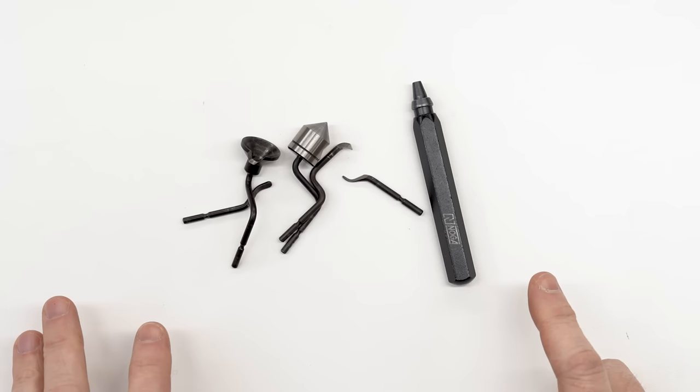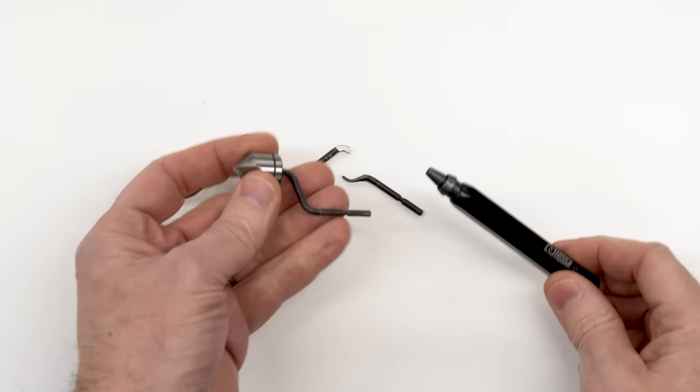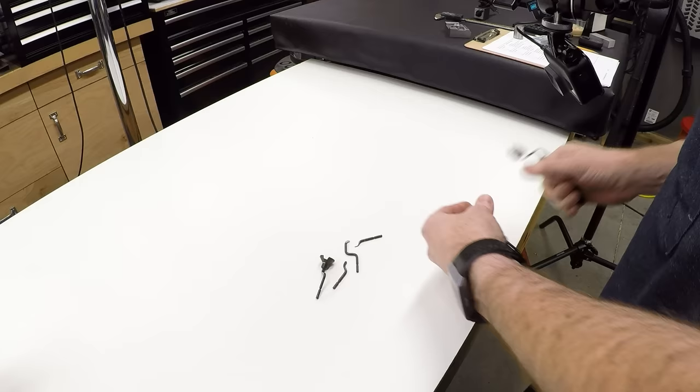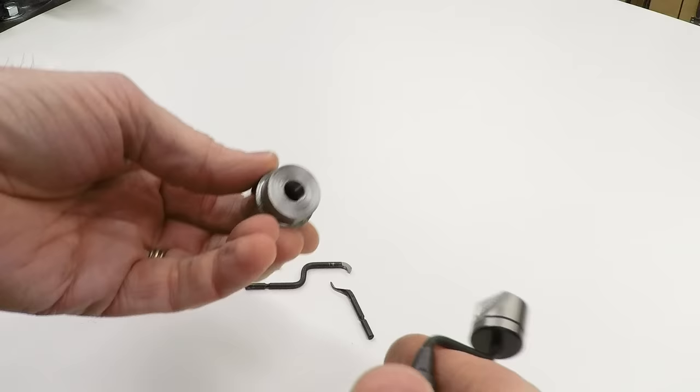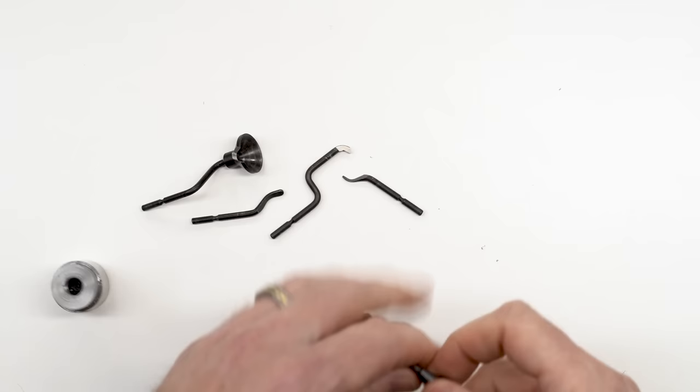And coming in at number two is my Noga deburring kit. And this is probably the one thing that I get the most comments about and the most questions about on the channel. So this is a little Noga rotary holder with a number of tools. And the one that most people ask about is this little rotary countersink. So I use it primarily for deburring holes. So if I got a hole here, this one actually is a thread and I can just stick it in there, spin it around and I get a nice clean little tiny chamfer. It takes the burr off of the inside of that hole.